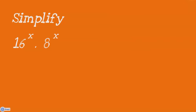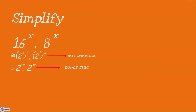Let's look at an example. Let us simplify 16 to the power x dot 8 to the power x. We first simplify 16 to the power x into its smallest exponential form, which is 2 to the power 4x, and we do the same for 8^x, giving us 2 to the power 3x. We do this to find a common base. Next, we multiply out the brackets using the power rule, giving us 2 to the power 4x dot 2 to the power 3x. Then we add the exponents using the product rule, giving us 2 to the power 4x plus 3x, and thus 2 to the power 7x.